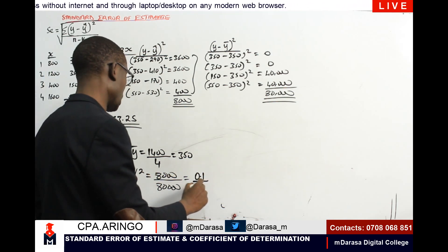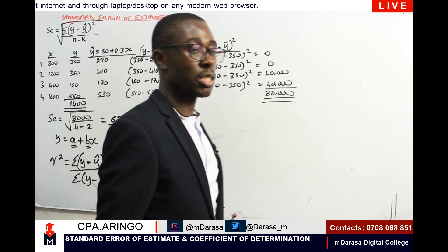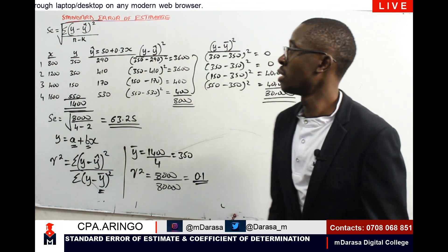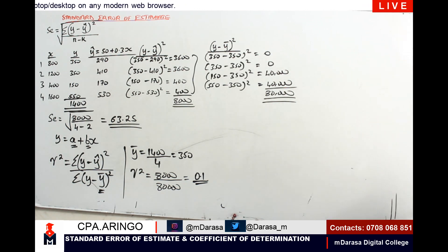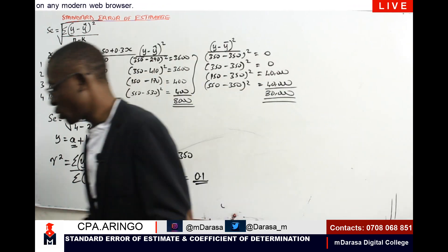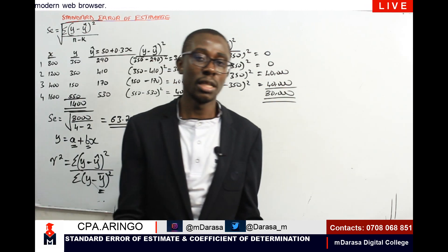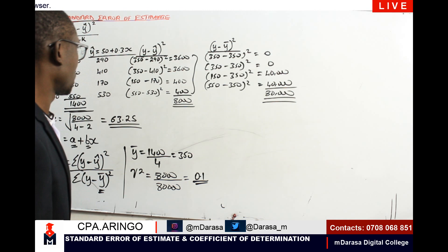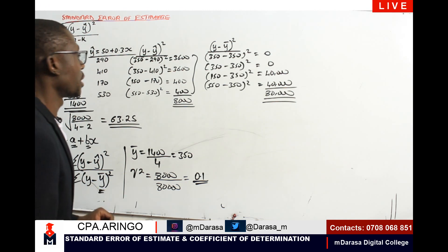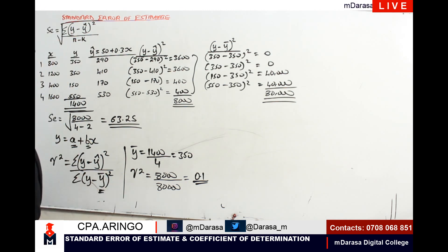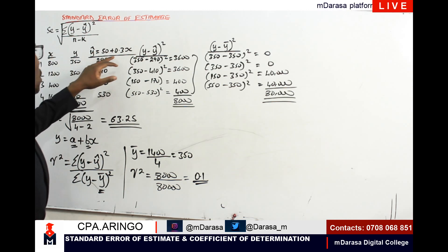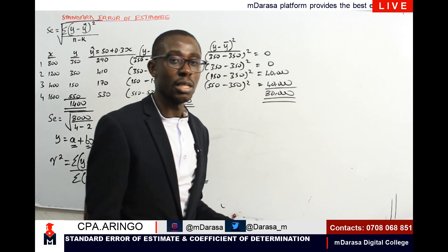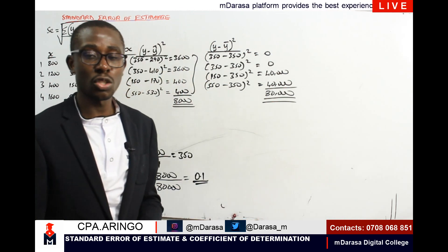So 0.1 is our coefficient of determination. These are straightforward questions that give us the whole idea of standard error. What you must always have in mind is that to determine standard error, we must have our regression line. The next question we will do is one where the regression line is not given and we must determine it ourselves.